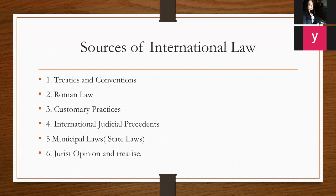Another source is jurists' opinions and treatises — note: T-R-E-A-T-I-S-E — treatises, not treaties. Treatises means books, manuals, or written material produced as a result of research work. Treaties (T-R-E-A-T-I-E-S) and conventions are different from jurists' opinions and treatises.